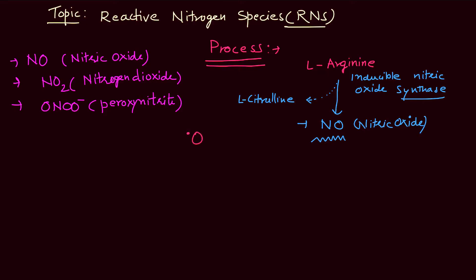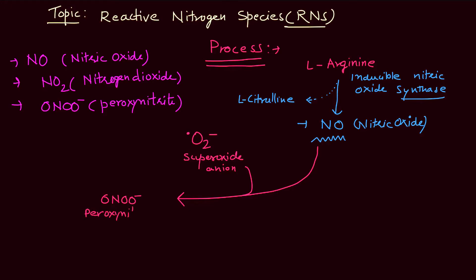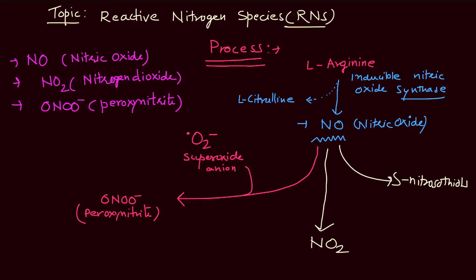From this step there is the formation of another nitrogen species via the combination of superoxide ion with NO. That particular species is ONOO negative, which is peroxynitrite. This is the second step where superoxide ion reacts with NO. There is also the production of NO2, which is basically the oxidation process of nitric oxide.